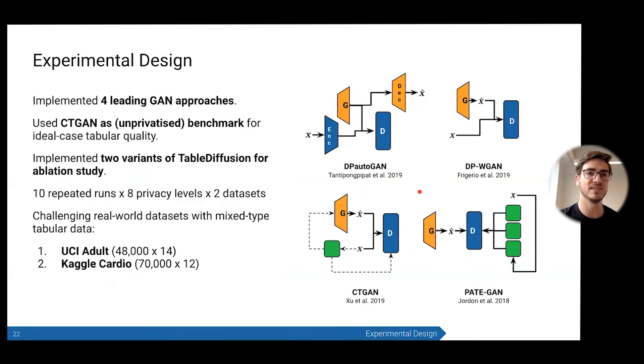The experimental design. As mentioned, implemented the four leading GAN-based approaches, used CTGAN, which is not privatized, as the benchmark for the ideal case of tabular quality. If you can hit that, that's amazing performance, especially under privacy, because it's not privatized and it's the best one. The two variants of the table diffusion model, which is what I called it, for the ablation study, so we can really tease apart the key mechanisms. We did this all for 10 repeated runs at eight different privacy levels on two different real world datasets. These were challenging mixed type datasets with tens of thousands of people and dozens of features.